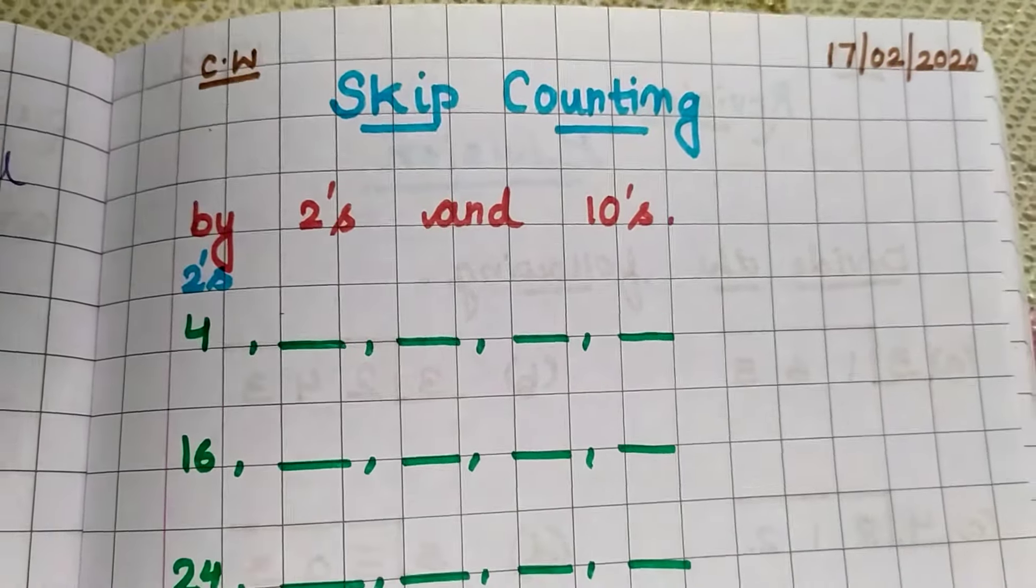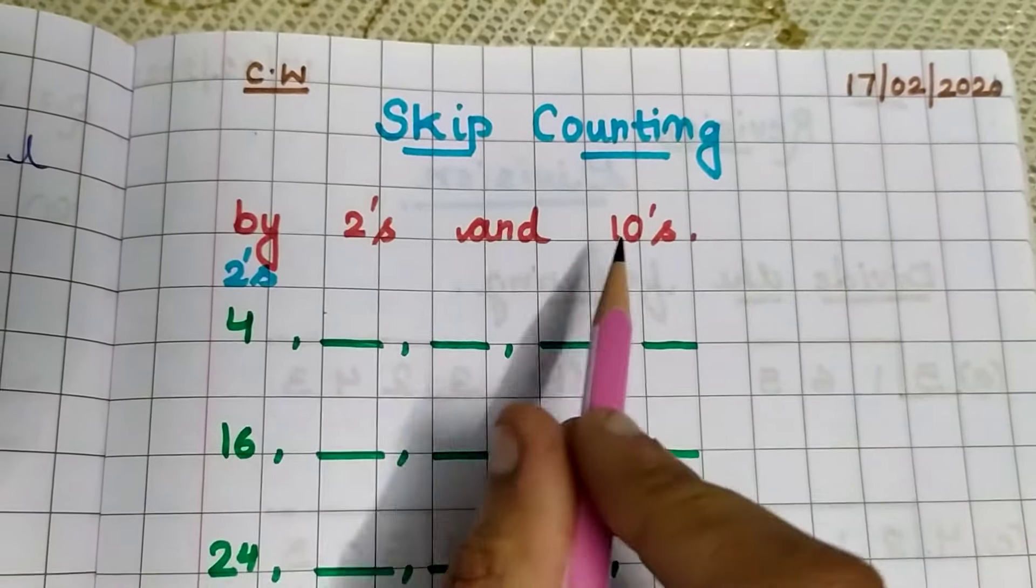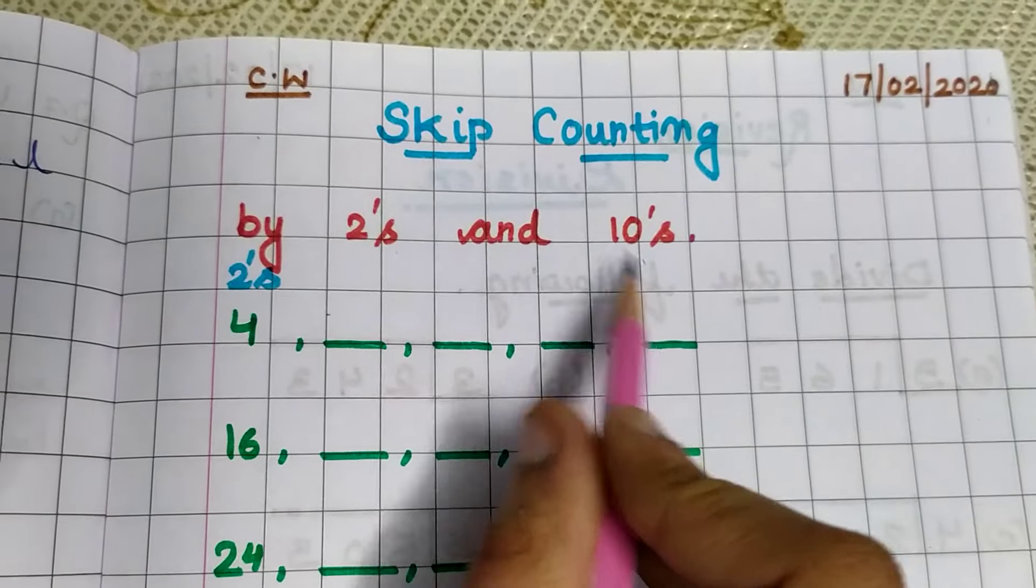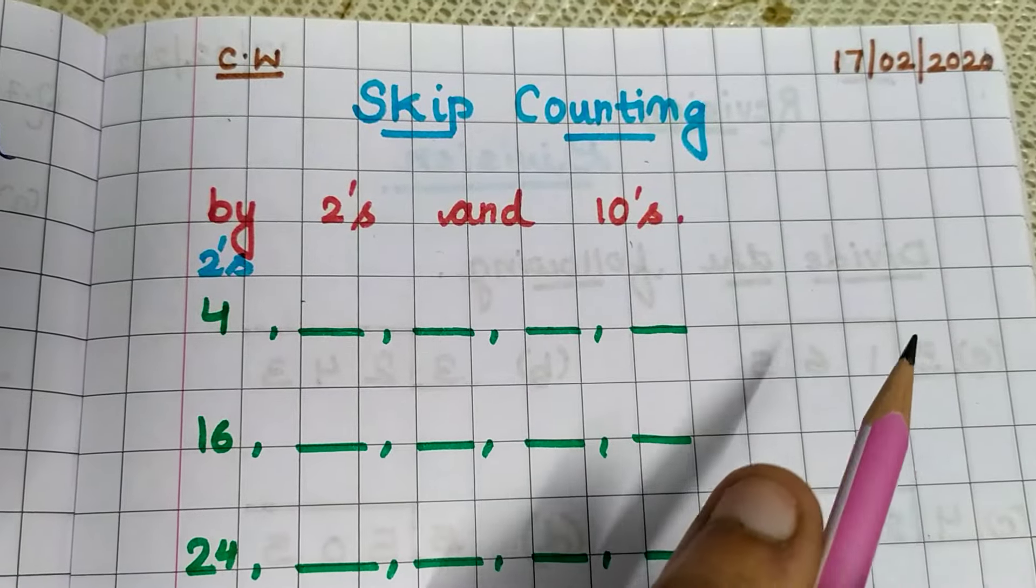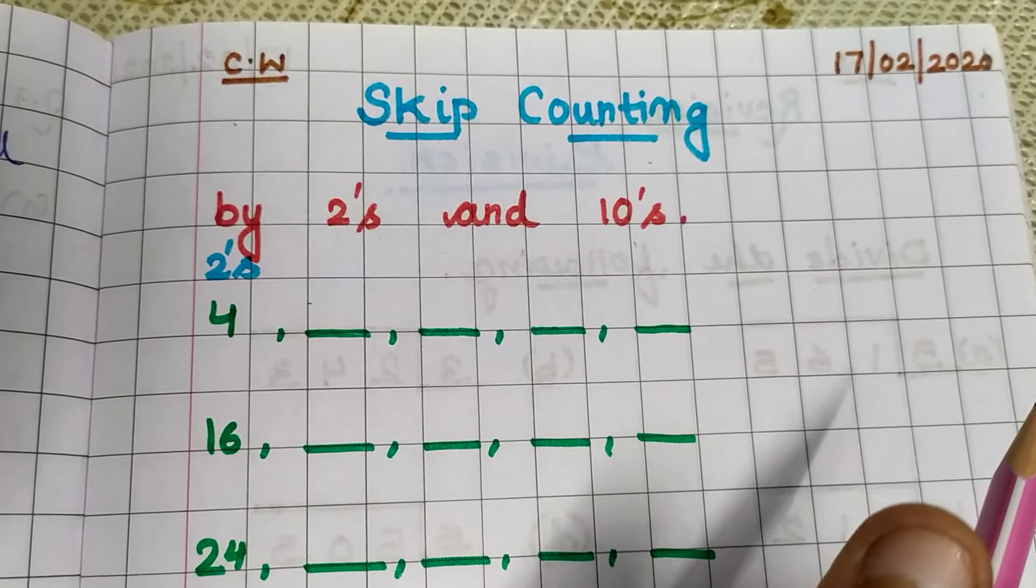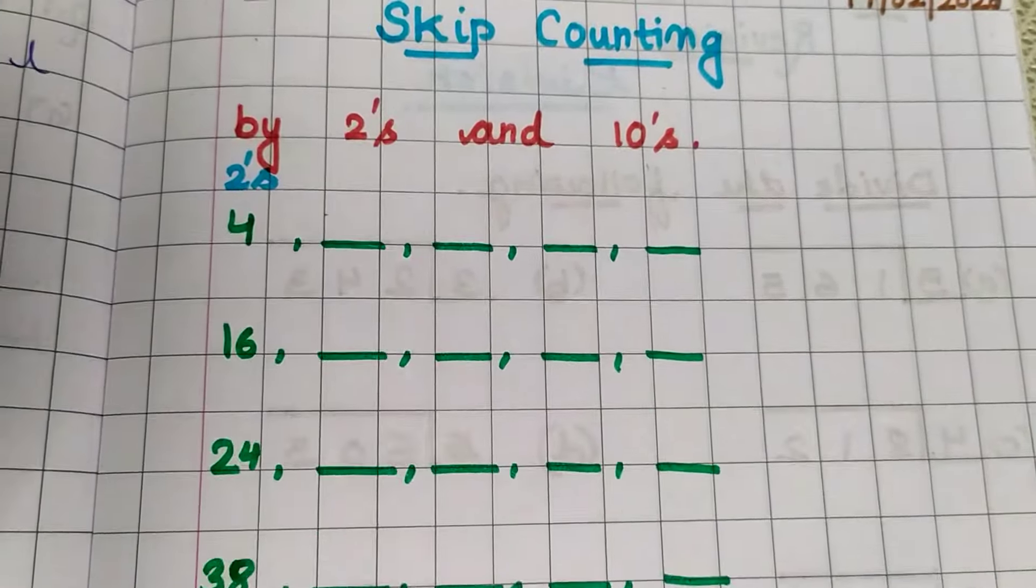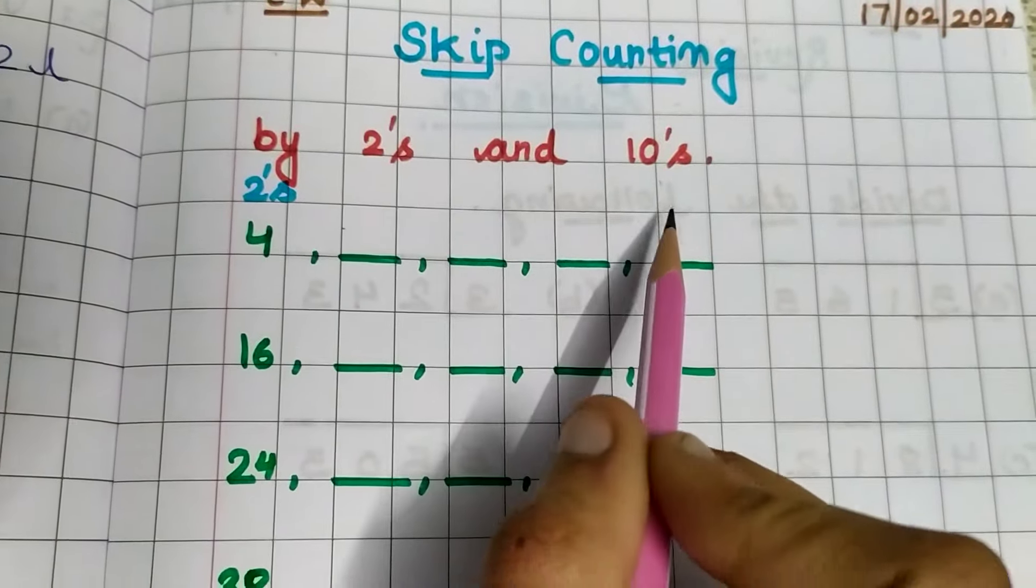Today we will do a revision of skip counting by 2's and 10's. Write down the heading using a sketch pen, very neatly.